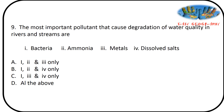Next question: the most important pollutants that cause degradation of water quality in rivers and streams. Options: bacteria, ammonia, metals and dissolved salts. Bacteria, ammonia, and metals all affect water quality. The answer is option A — 1, 2, and 3.